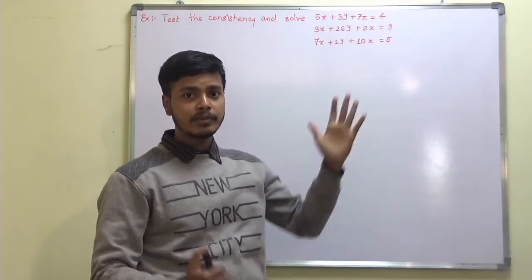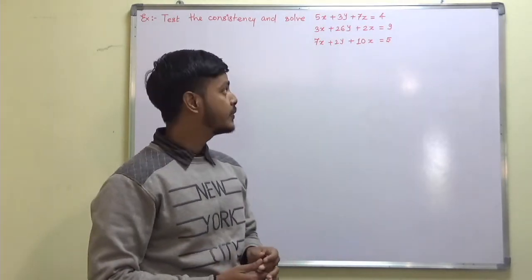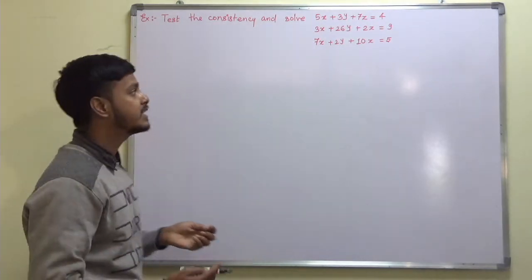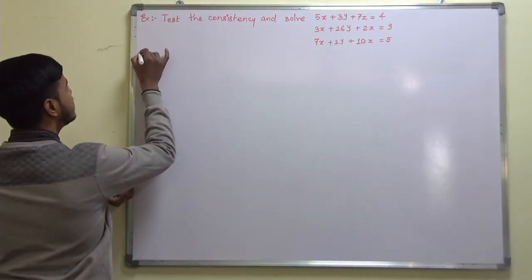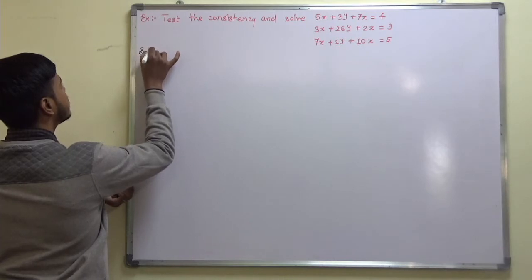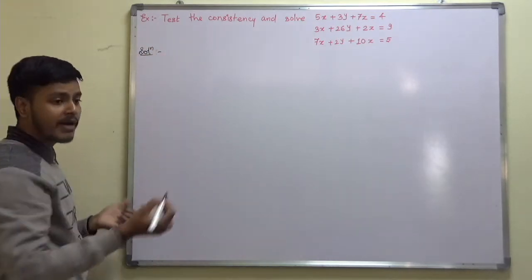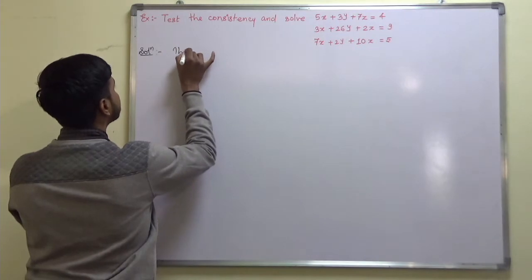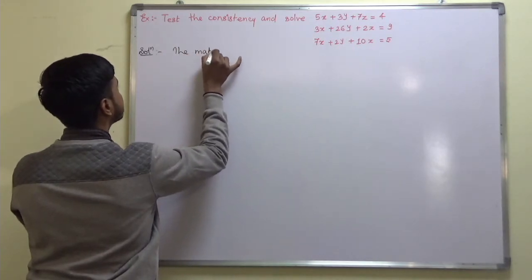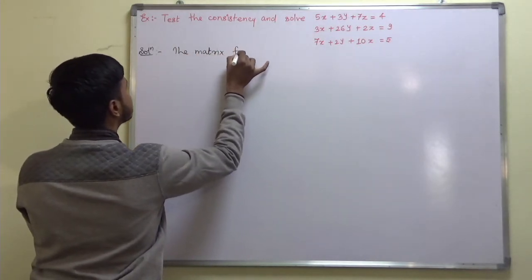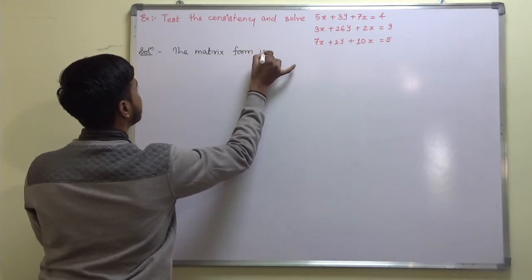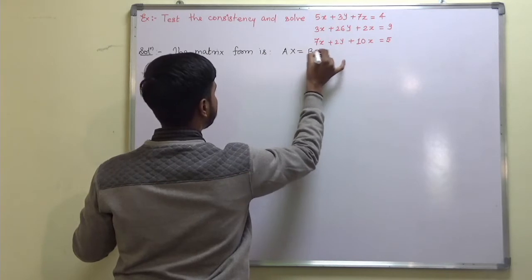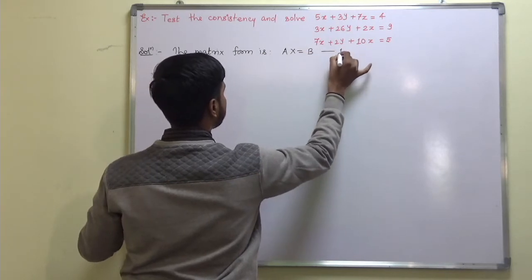Do you remember what we are doing in a problem like this? Follow the working rule. What is the first step of the working rule? The first step says: write down the matrix form. So the matrix form is Ax is equal to B — say this is equation 1.